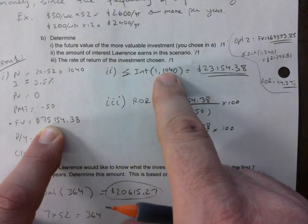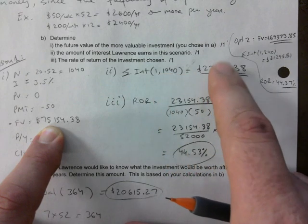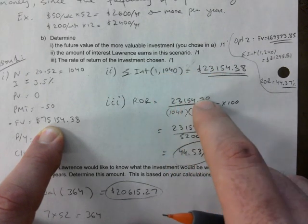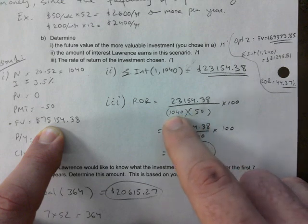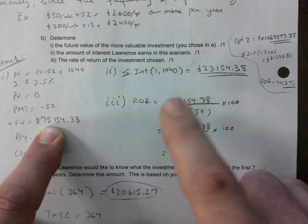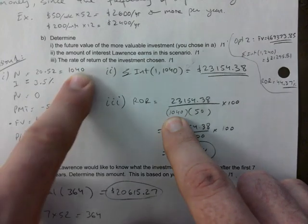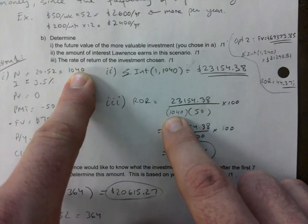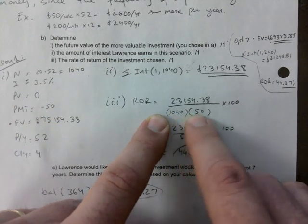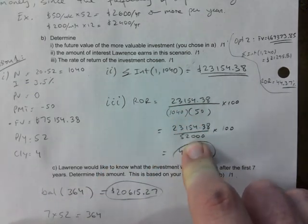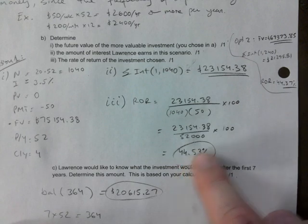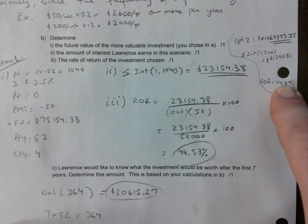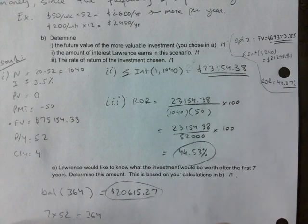The interest that you would have earned under option one is $23,000. The rate of return is interest divided by, what is this? This is principle. You made $50 payments over 1,040 payments. So, this here is actually your principle. And so, it's over $50,000. So, $44.53 or $44.37. It depends on which option you chose.